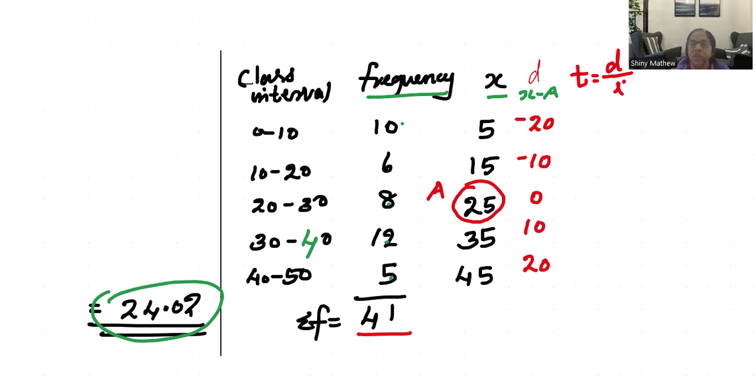Dividing by the highest common factor of 10: negative 20 by 10 is negative 2, negative 10 by 10 is negative 1, 0 by 10 is 0, 10 by 10 is 1, and 20 by 10 is 2.